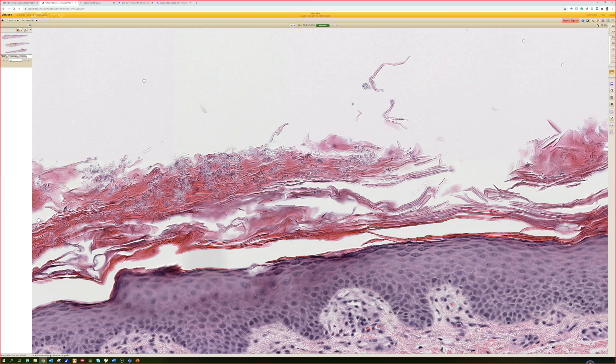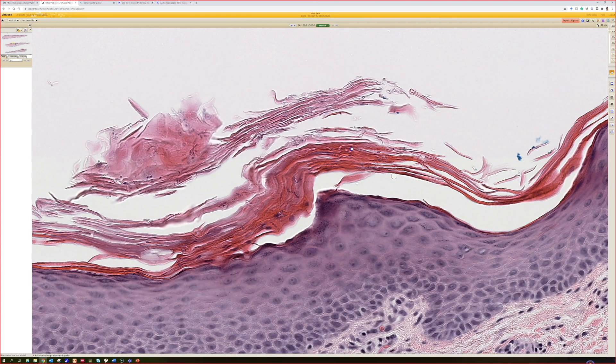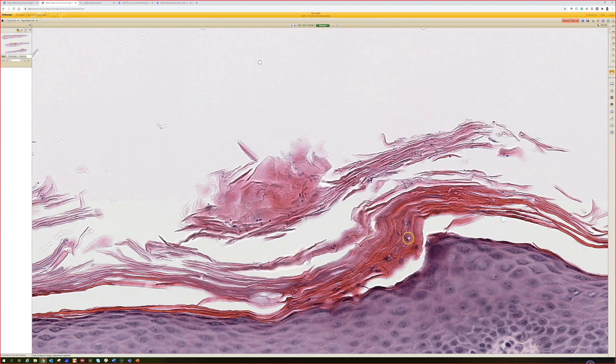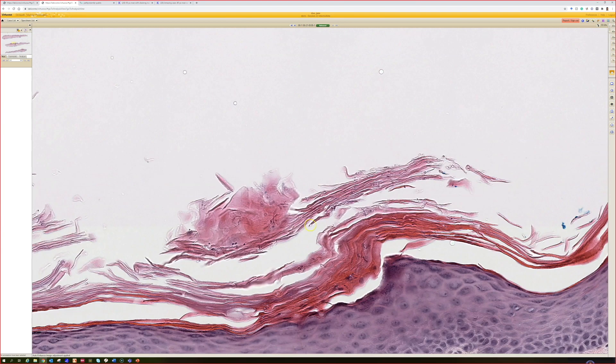But when they start producing hyphae, once you get not just the meatballs but the spaghetti, that's when you know it's actually probably a spreading infection that's actually tinea versicolor or pityriasis versicolor, as some people like to call it, because it's not actually dermatophyte fungus and not tinea.